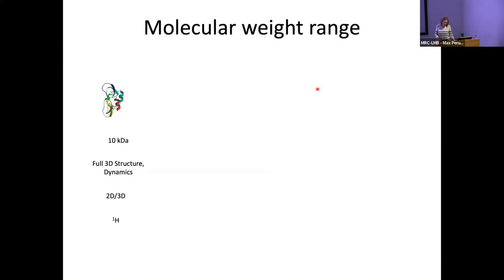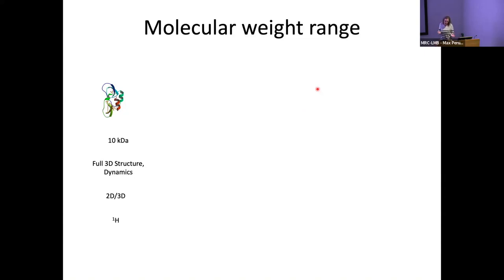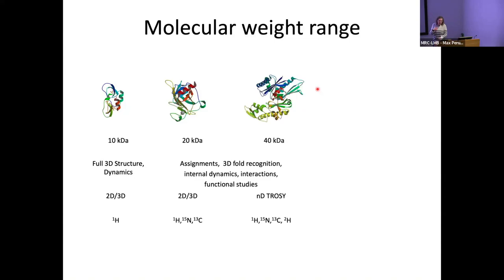For samples and the molecular weight range: if you have a smaller system like a peptide around 10 kilodaltons, you might be able to order that from a peptide synthesis company or recombinantly express it. We wouldn't necessarily ask you to do any isotopic enrichment. We could look at any structure and we could look at the dynamics. For bigger systems, we're going to ask you to isotopically enrich so we can look at other nuclei — specifically 15N and 13C.